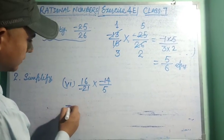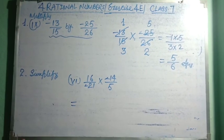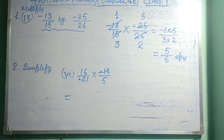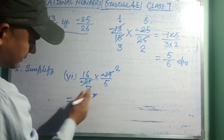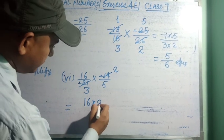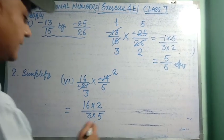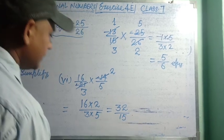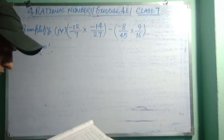Here the two minus signs will get cancelled, or we can multiply minus one in numerator and minus one in denominator — this is why the two minuses cancel. Then 7 × 2 = 14 and 7 × 3 = 21. This gives 16 multiplied by 2 divided by 3 × 5, which equals 32 divided by 15. That is your answer.